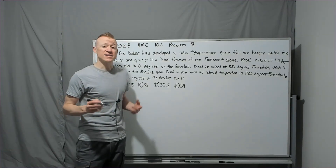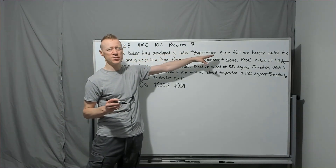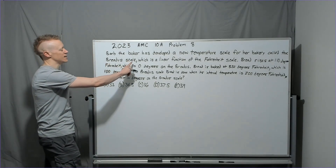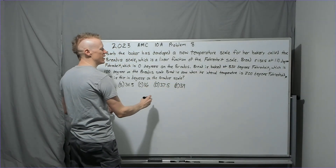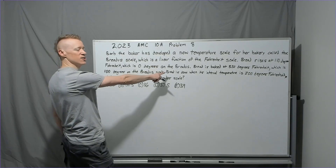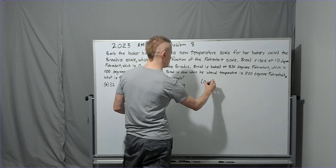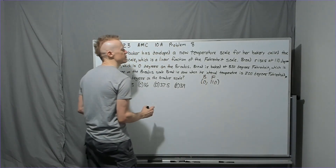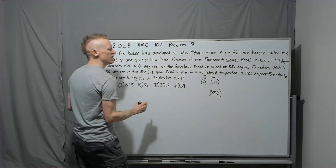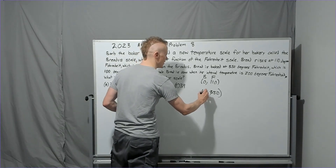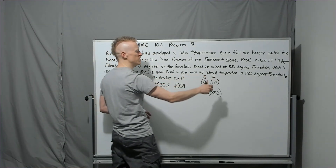Problem eight on the 10A: Barb the baker has developed a new temperature scale called the Brettis scale, which is a linear function of the Fahrenheit scale. Bread rises at 110°F, which is 0° on the Brettis scale. Bread is baked at 350°F, which is 100° on the Brettis scale. So our two data points are (110°F, 0°B) and (350°F, 100°B).